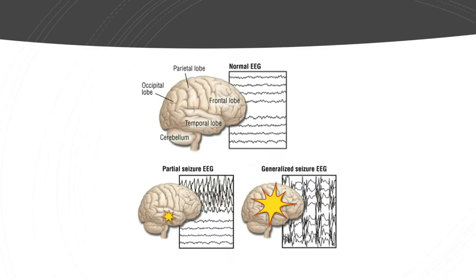Here's a human brain showing the corresponding EEGs — a test that tracks brainwave patterns. You can see the normal EEG at the top, then the partial seizure is more localized, with only part of the EEG showing that abnormal burst of activity. A generalized seizure, which involves both hemispheres, shows the total EEG with all brainwave patterns disrupted.